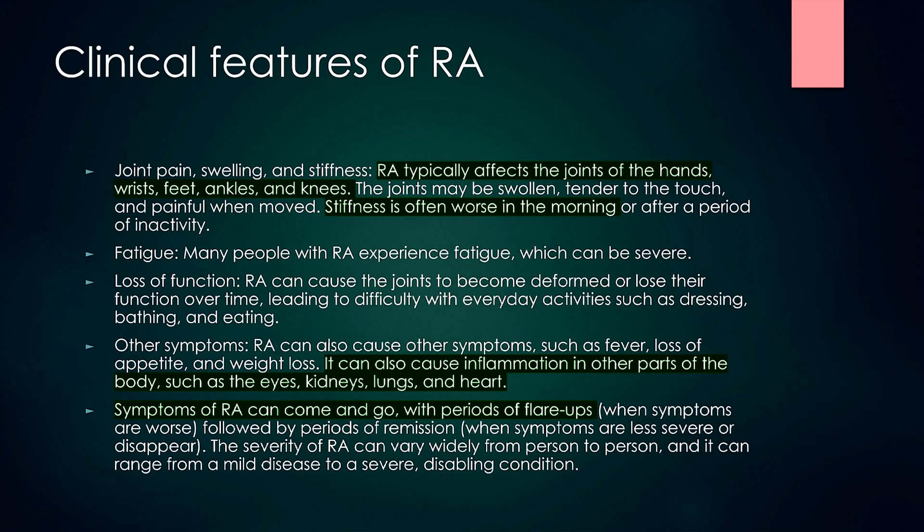Some common clinical features of RA are joint pain, swelling and stiffness. RA typically affects the joints of the hands, wrists, feet, ankles and knees. The joints may be swollen, tender to touch and painful when moved. Stiffness is often worse in the morning or after a period of inactivity. That's why we always ask patients during history-taking about morning stiffness — most patients report morning stiffness of 30 minutes or more.